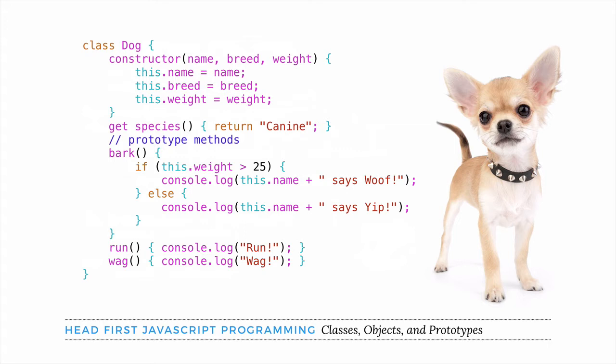You can also specify prototype properties and methods as part of the class. When you first see this syntax, it's going to look a little bit strange. A class looks a bit like an object, but you don't separate the components of a class with a comma, like you separate the properties of an object. We don't write function in front of the prototype methods, and for properties we want to add to the prototype, we use the keyword get.